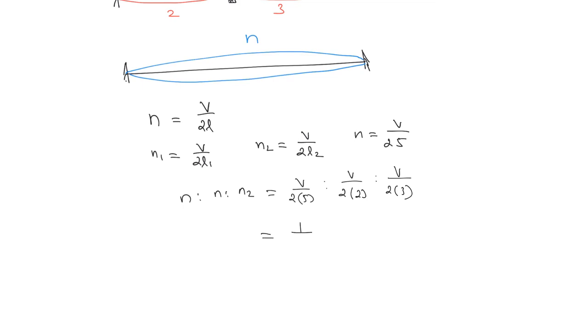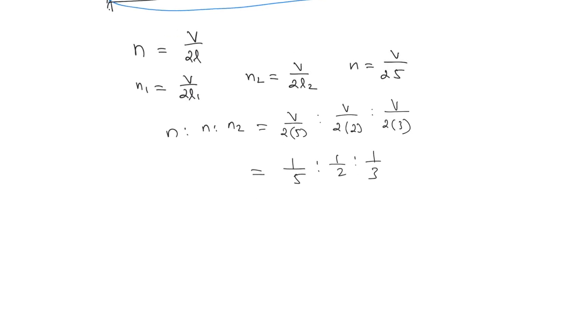We can write this in the ratio 1 by 5 is to 1 by 2 is to 1 by 3. If you multiply by 30, we get 6 is to 15 is to 10.